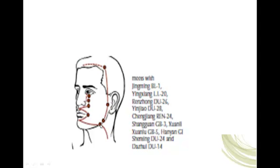Then the channel moves up and ascends anterior to the ear, passing through stomach seven, and moves within the hairline — half a cun within the hairline and four and a half cun lateral to the anterior midline. This is head corner, stomach eight. A deep branch moves from stomach eight to connect with Governor Vessel 24.